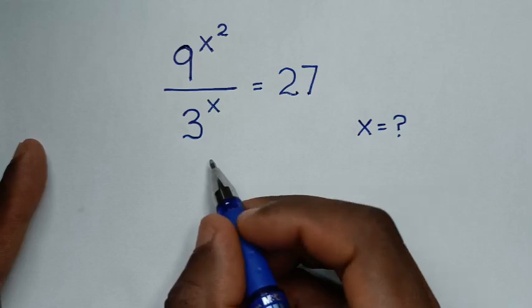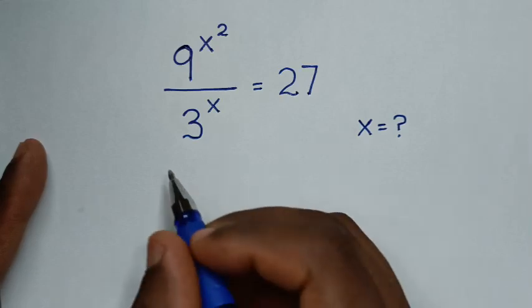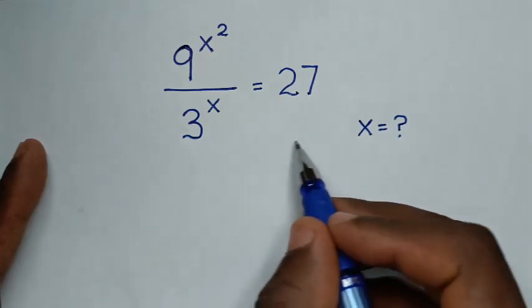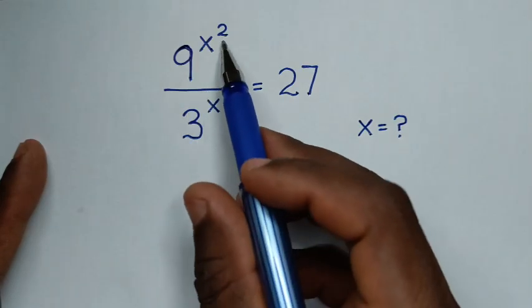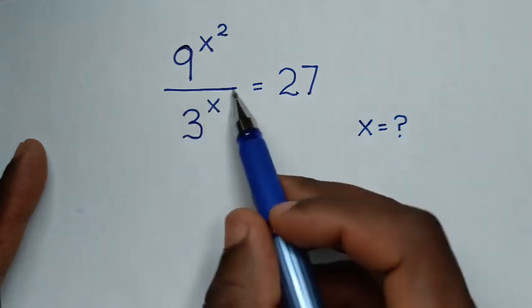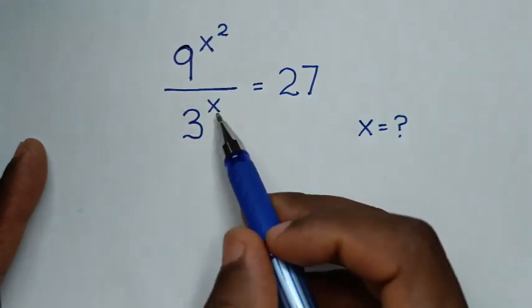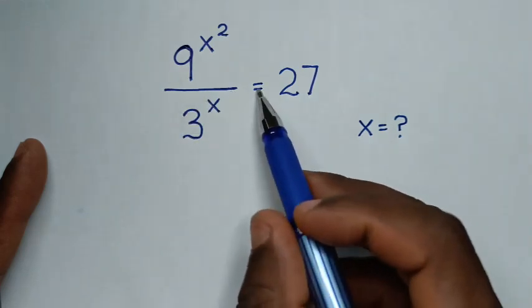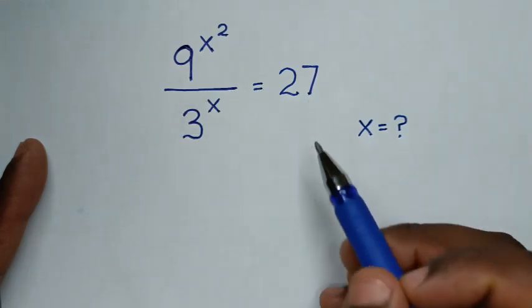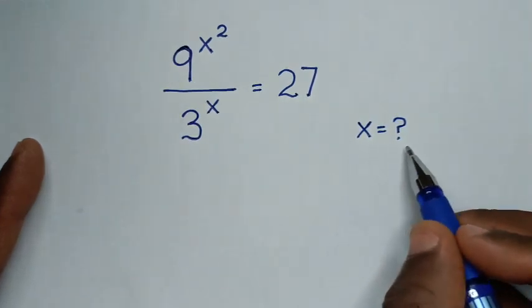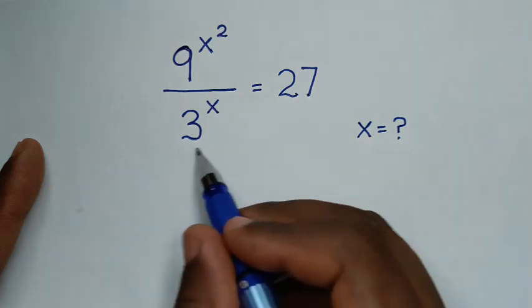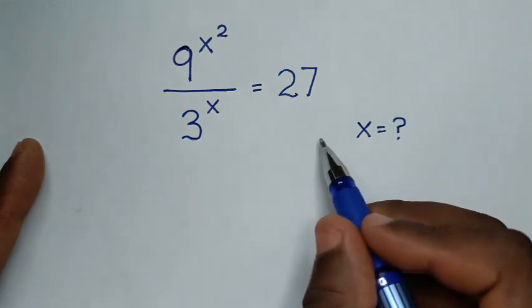Hello, you are welcome to solve this math problem which is 9 to the power of x squared over 3 to the power of x is equal to 27, to find the values of x from this equation.